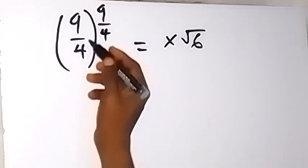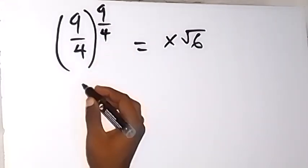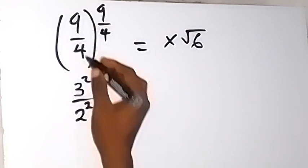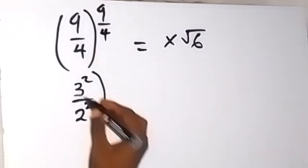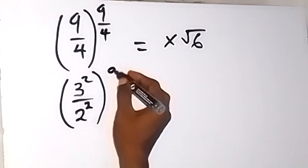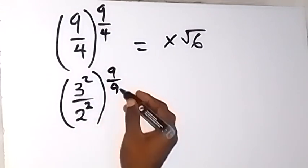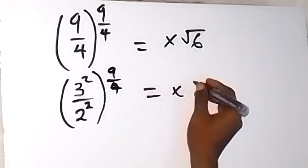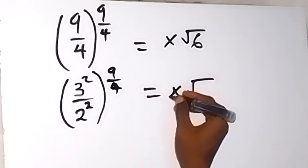We can express 9 over 4 here as 3 squared over 2 squared inside the bracket, then raise to power 9 over 4 that we have there. Then equals x root 6.